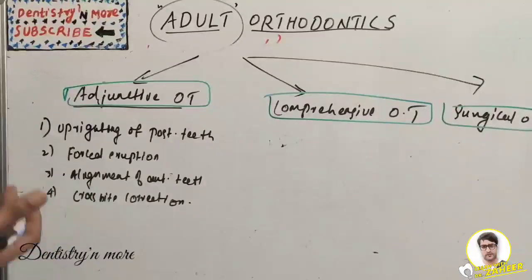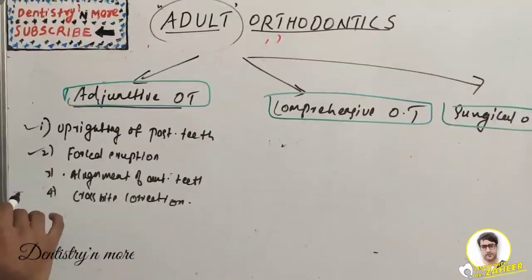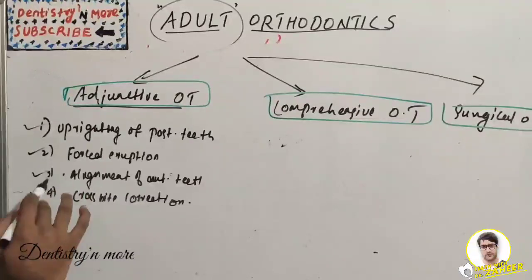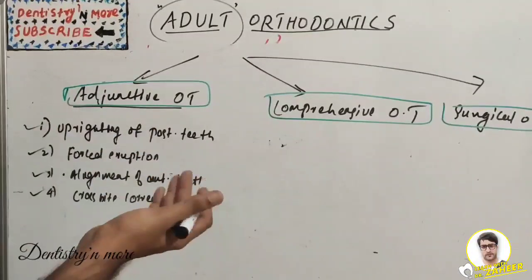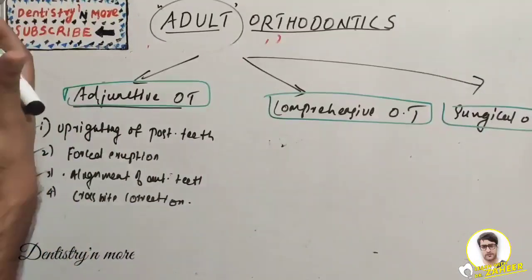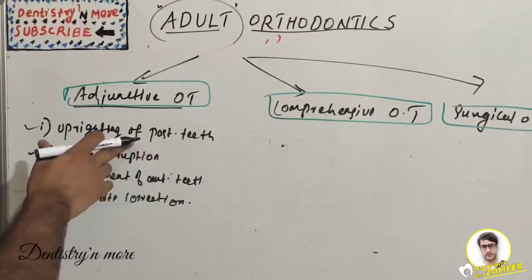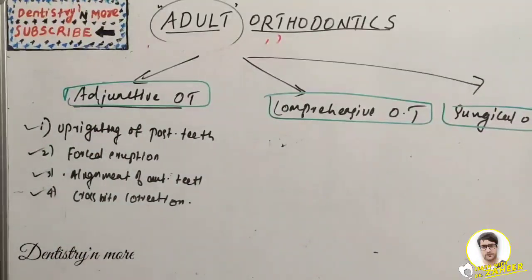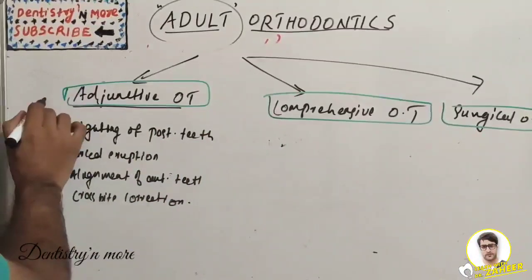According to Proffit, adult orthodontic procedures are classified into three types: adjunctive, comprehensive, and surgical. Adjunctive orthodontic treatment is tooth movement carried out to facilitate other dental procedures necessary to control disease and restore function. It typically involves uprighting of posterior teeth, forced eruption, alignment of anterior teeth, and cross-bite correction. Uprighting means repositioning of teeth that have drifted after extraction or bone loss, to facilitate placement of RPD, FPD, or implants.